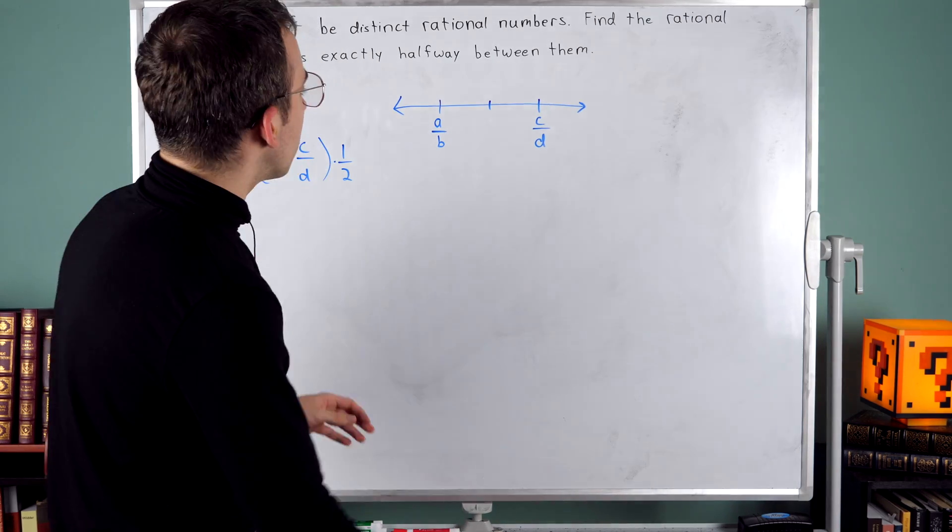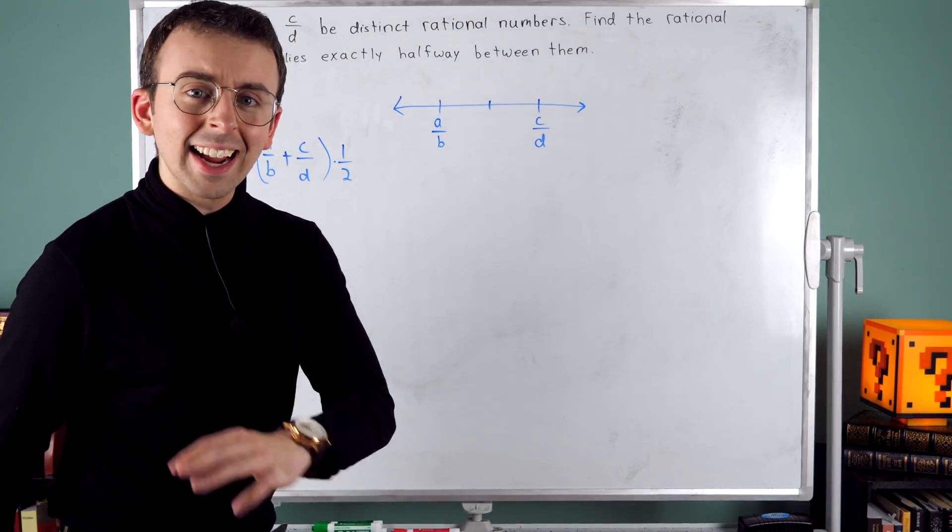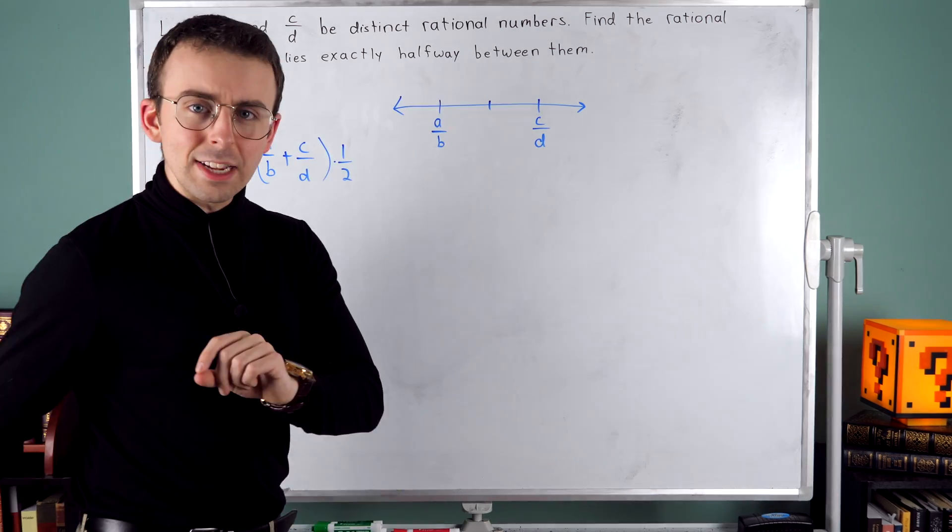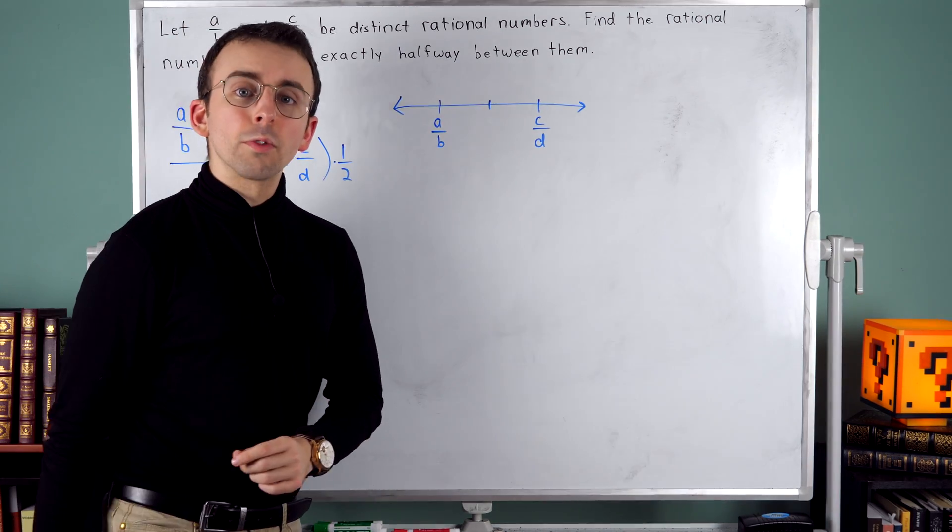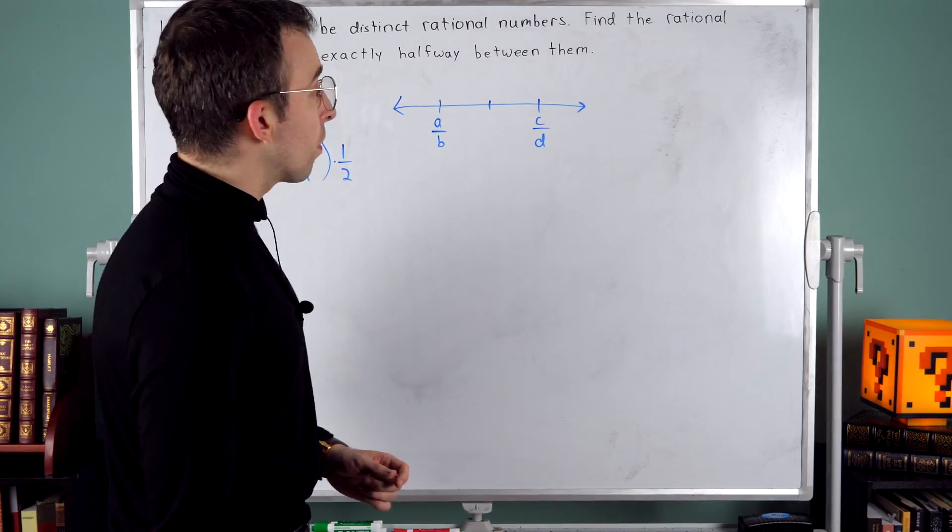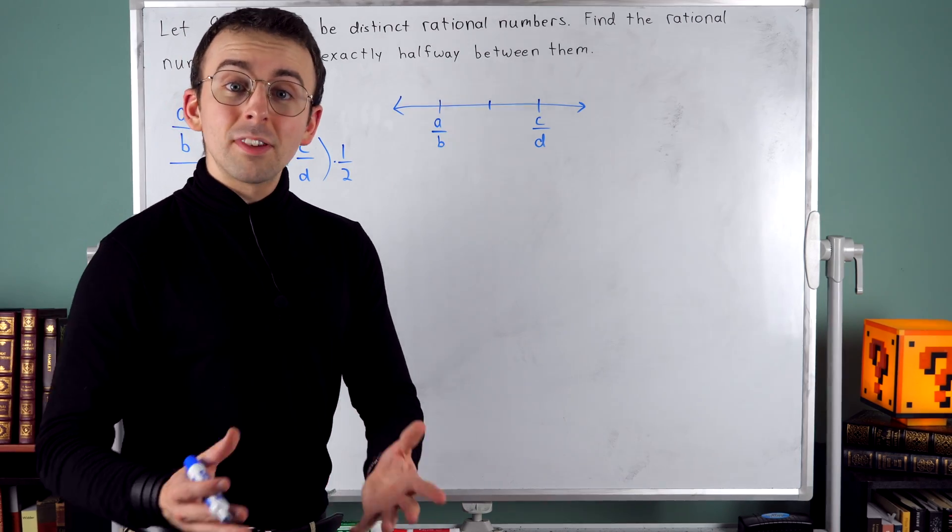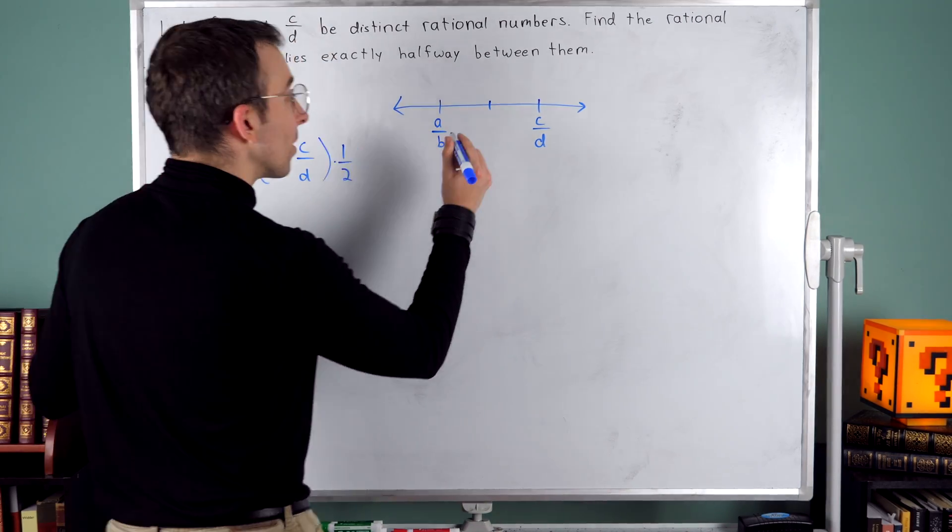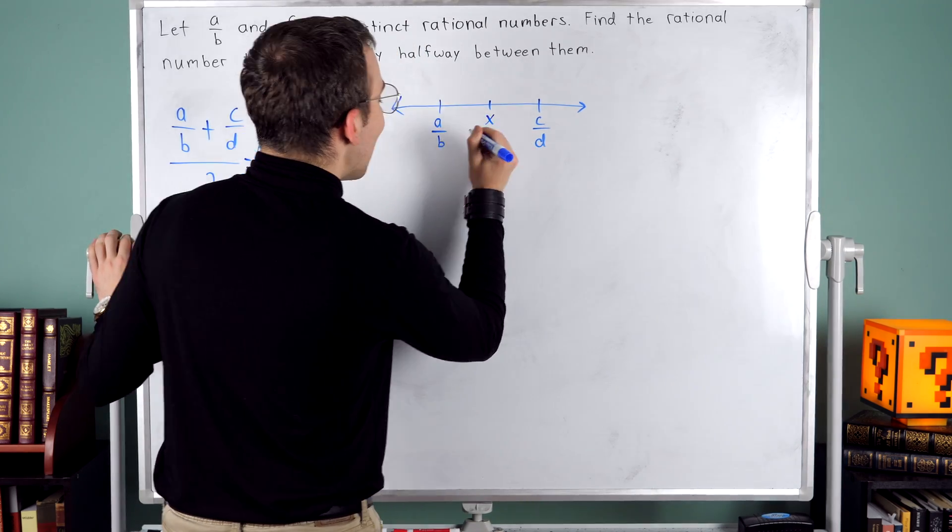We know that we're looking for this number here that's exactly halfway between these two. One of the most useful things you can do when you're trying to solve a problem is to give stuff names. So let's name this number that we're looking for. Let's call it x.